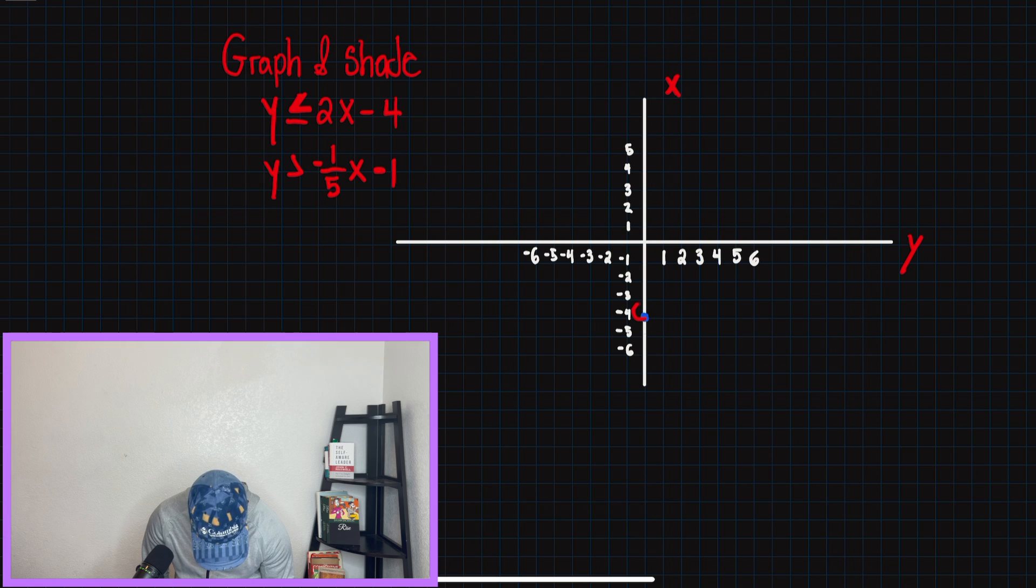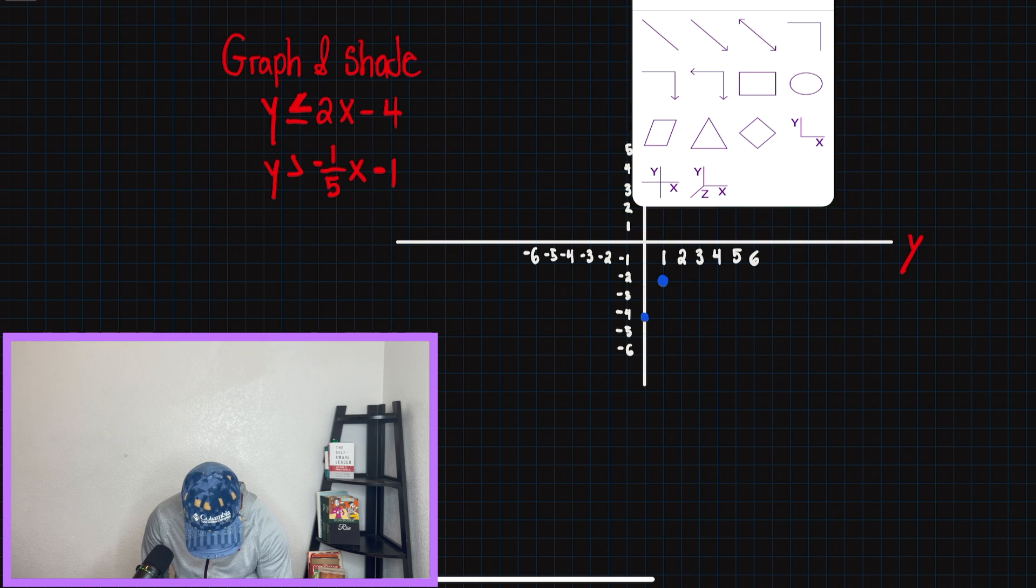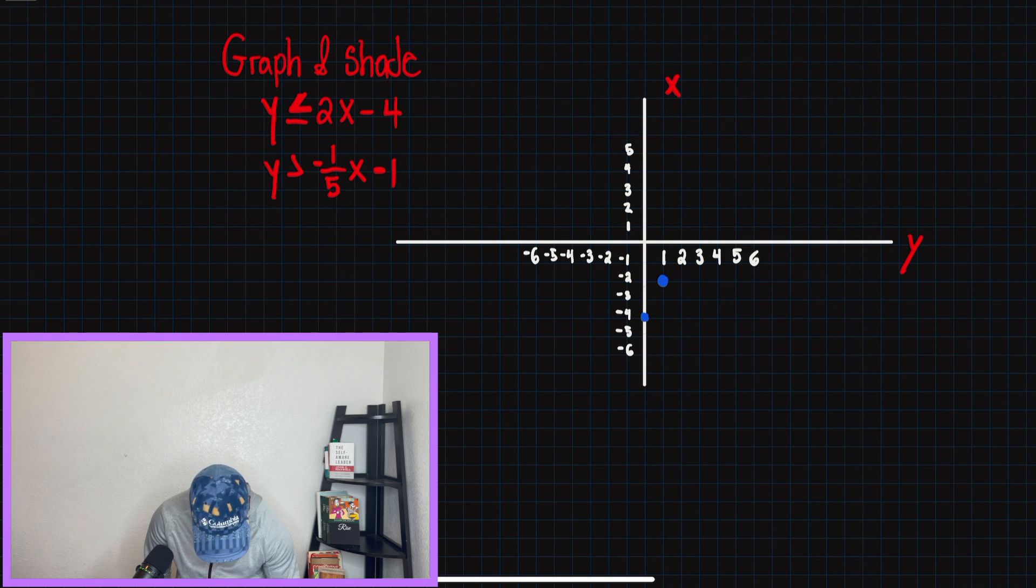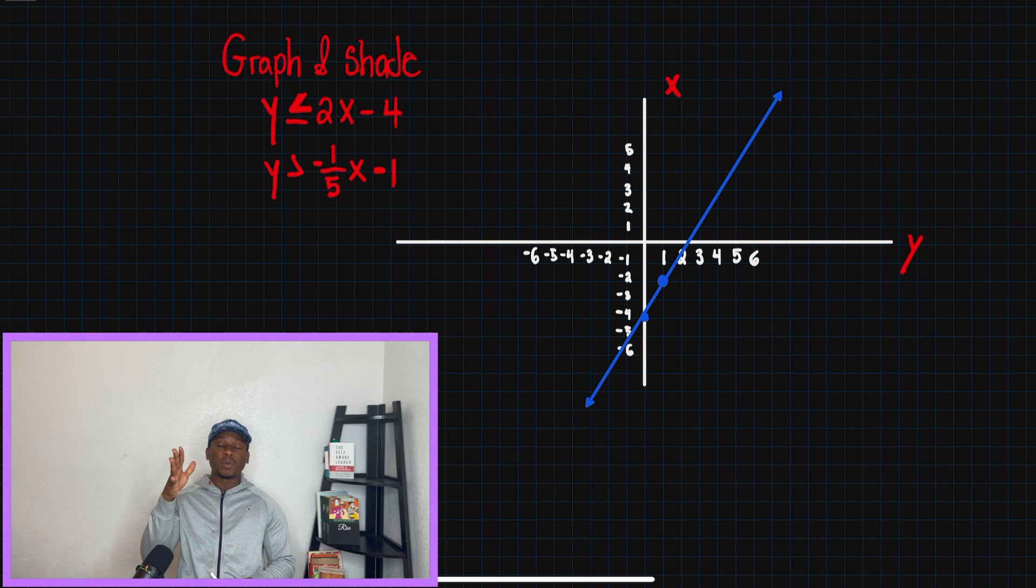So once we do that, our new dot should be right here where you see me putting this blue dot. And what we're going to do now is we're going to draw a line through both of these points so that we can have our line.